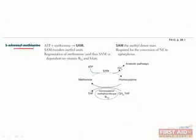S-adenosylmethionine, or SAM, is an amino acid derivative required for methyl transfer reactions, such as the synthesis of homocysteine from methionine or epinephrine from norepinephrine. SAM is produced by combining ATP with methionine. B12 and folate are both required to regenerate methionine, and therefore to regenerate SAM, because to synthesize methionine from homocysteine, you need tetrahydrofolate to donate a methyl group and B12 to act as a cofactor for the reaction.